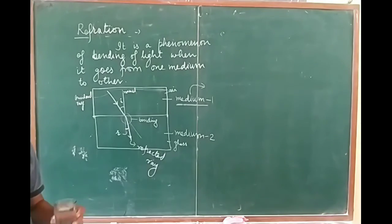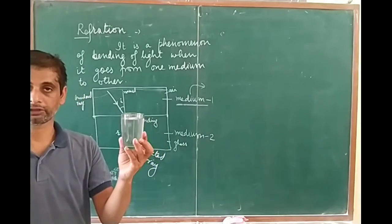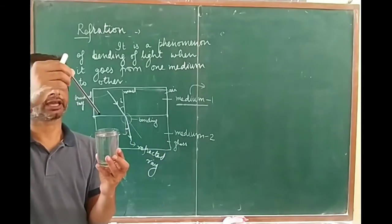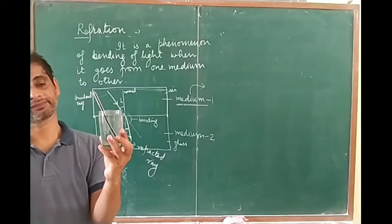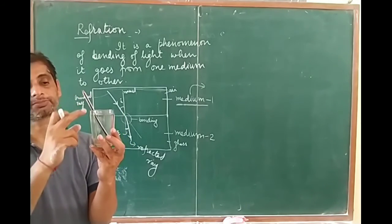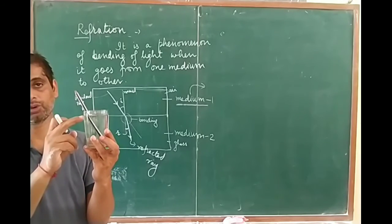Let us do this activity. This is a tumbler, a glass tumbler filled with water. And this is a stick. I put this stick inside the water. What are you observing? You observe that this pencil looks bent. There is bending here.